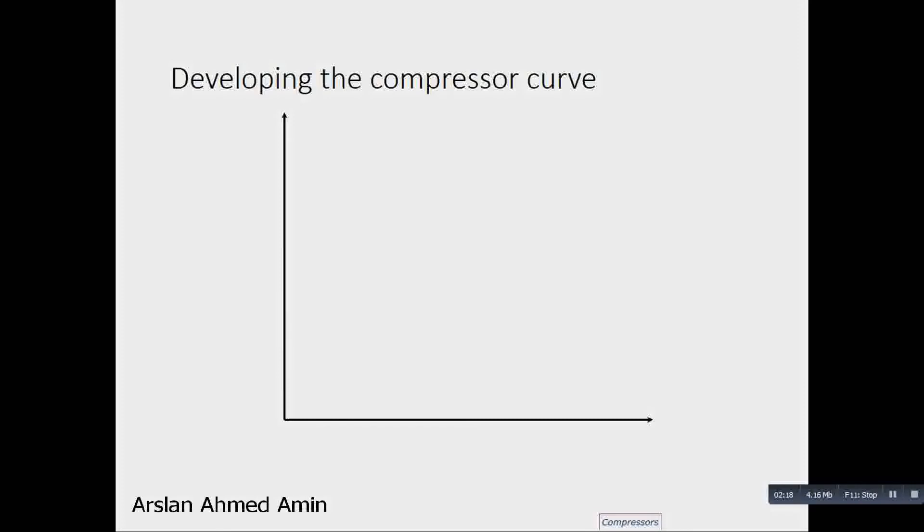Now we will see from the compressor curve how the surge is developed. Here we have the volumetric flow along the x-axis and the compression ratio along the y-axis. And we have this compressor characteristic curve. So this is the compressor curve for a specific speed.